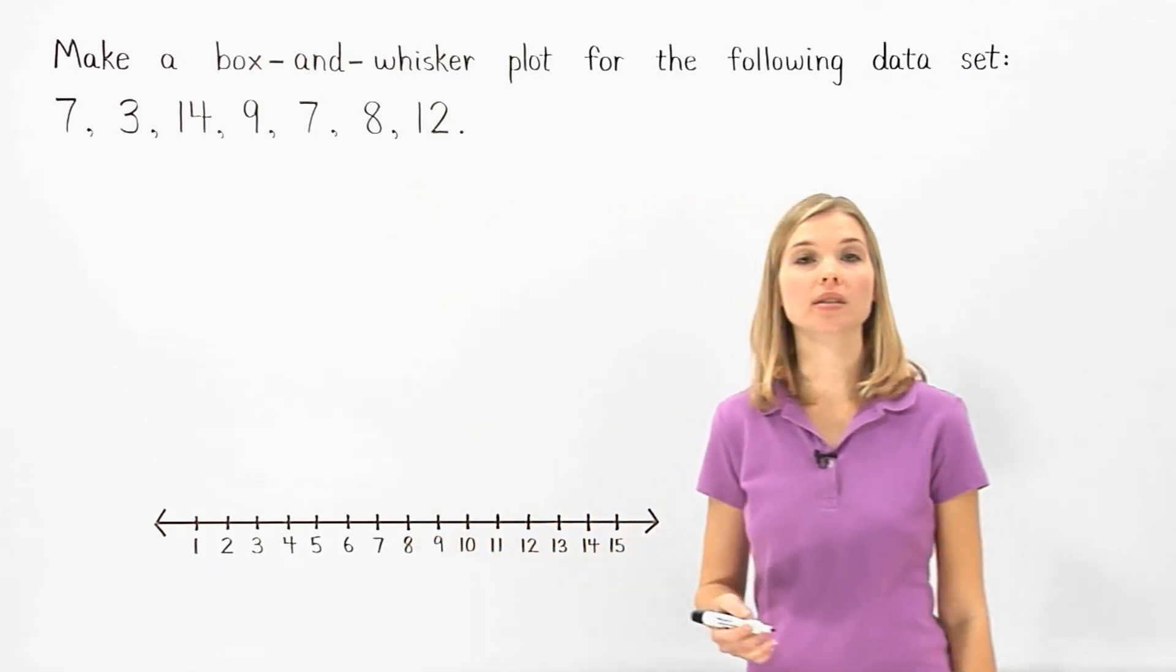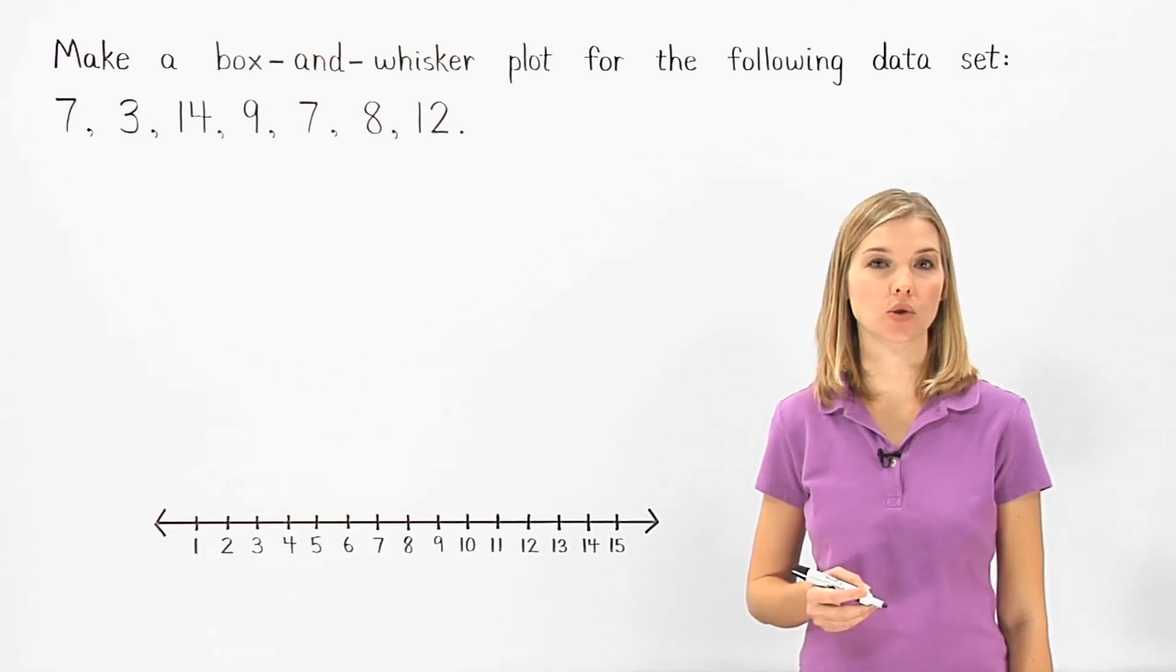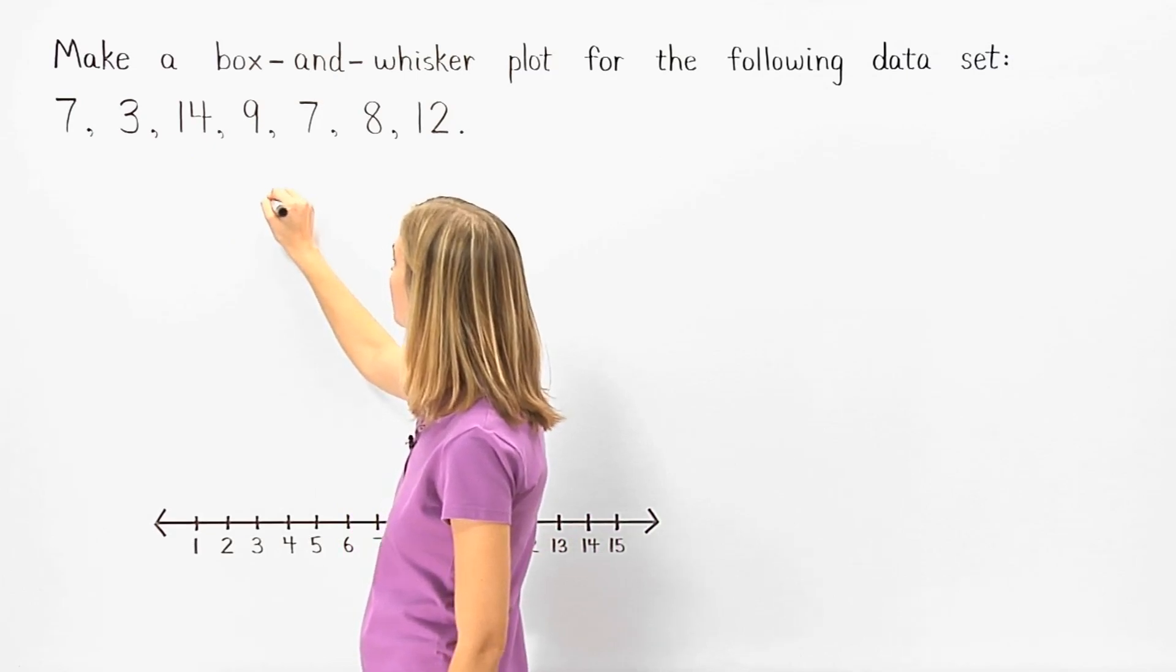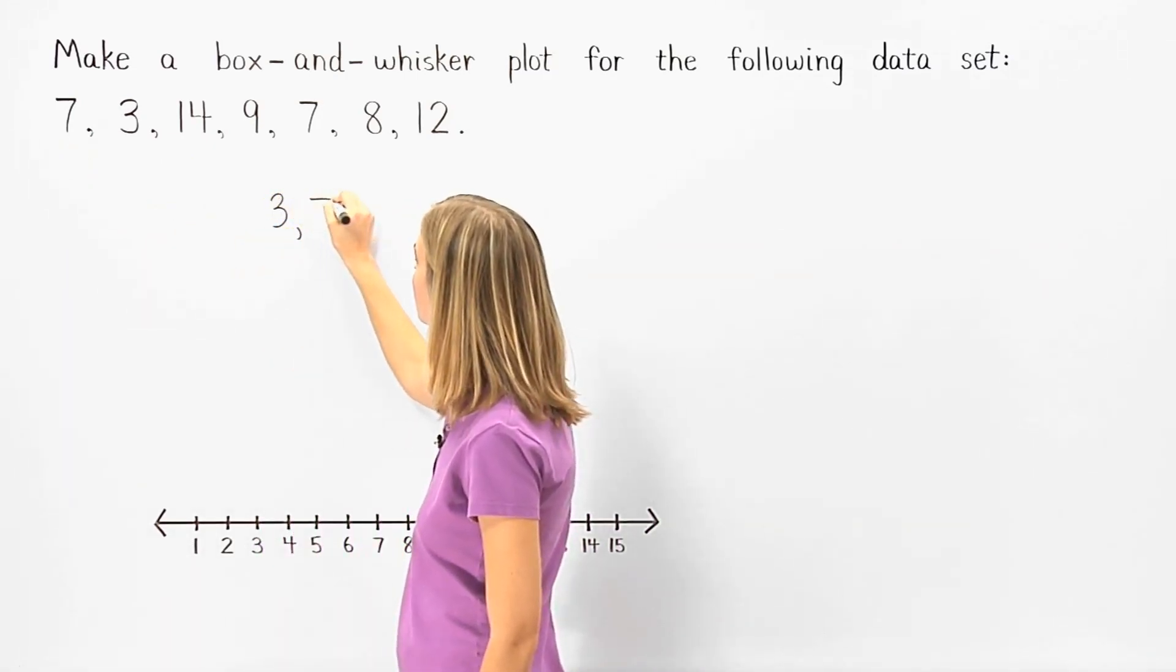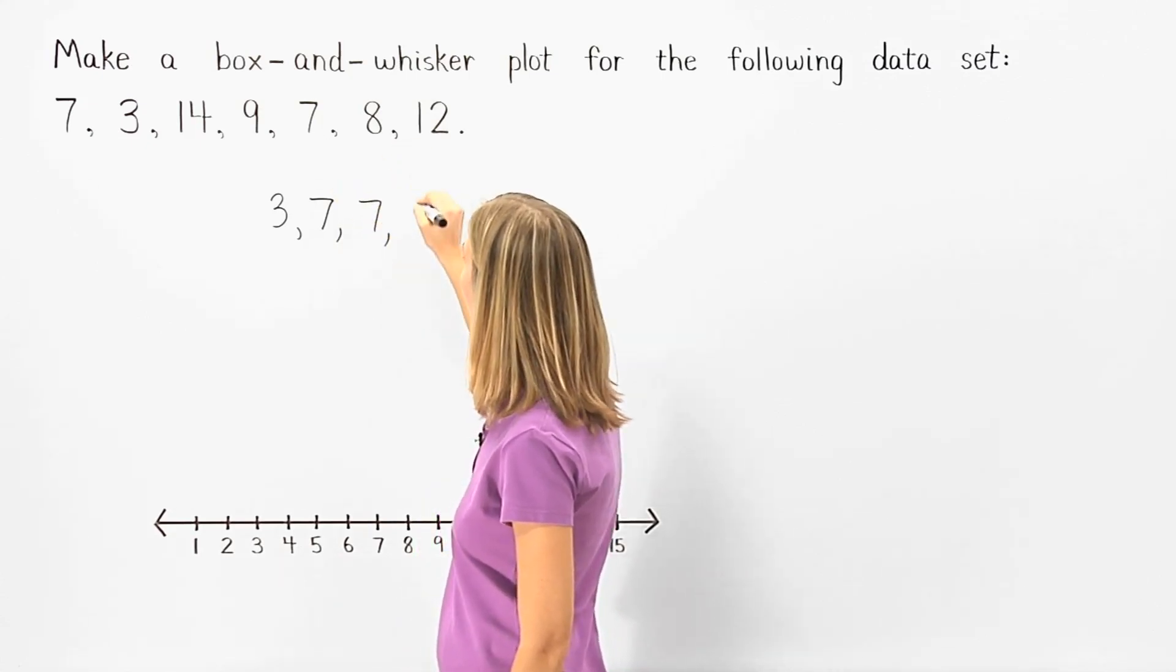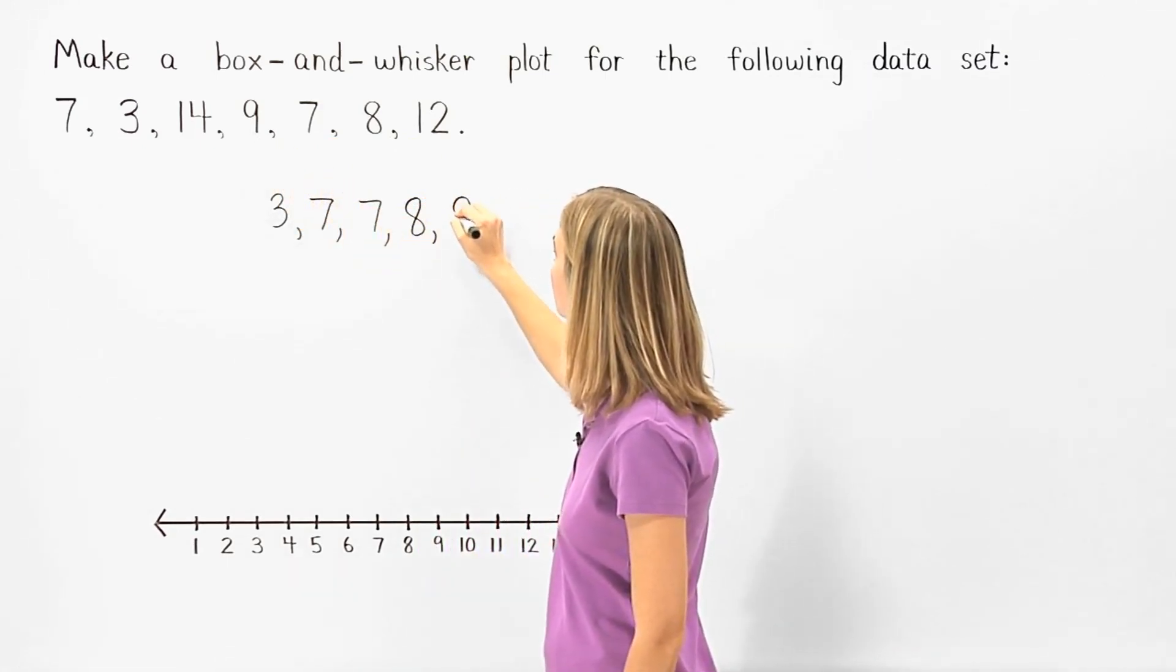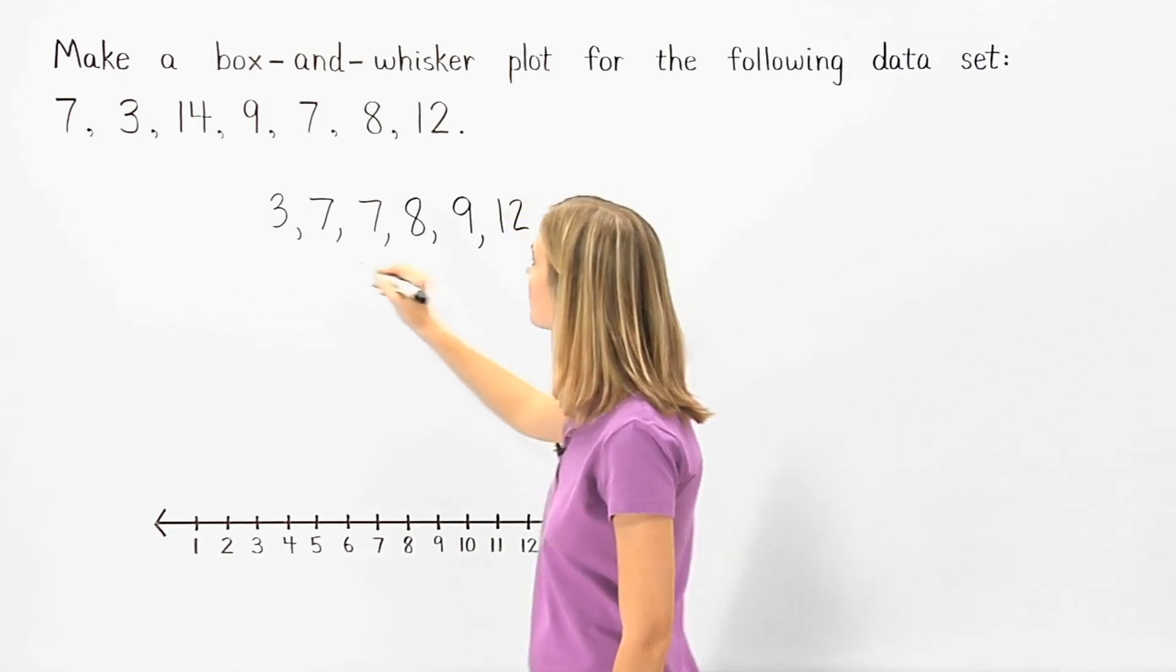To make a box and whisker plot, our first step is to write the numbers in order from least to greatest. And we have 3, 7, 7, 8, 9, 12, and 14.